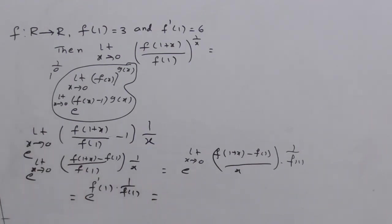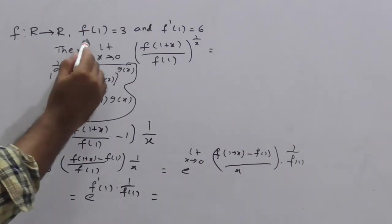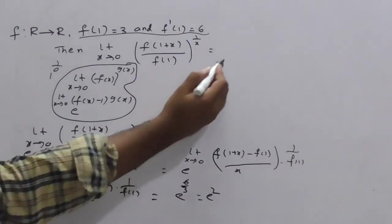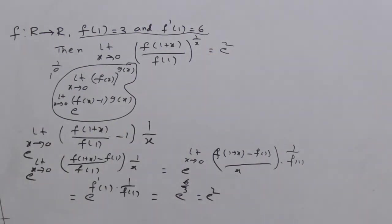So, already f'(1) given as 6 and f(1) given as 3 here in the given question itself. So, we have the values of f'(1) and f(1). Substitute here. This is e to the power 6 by 3. That is nothing but e squared. So, answer for this question is e squared.